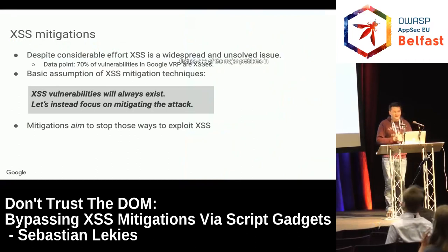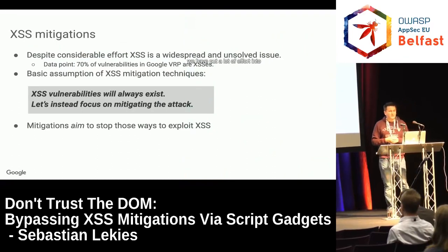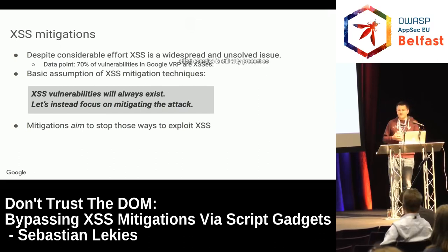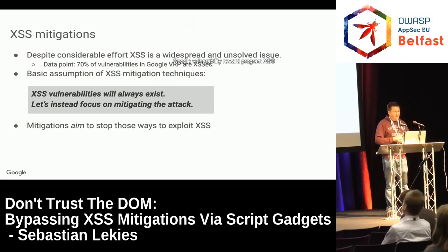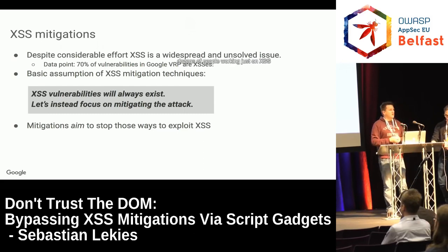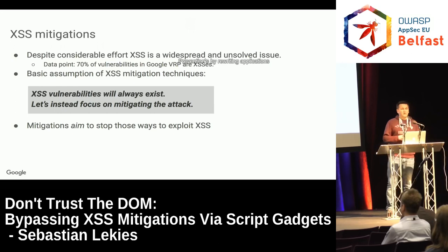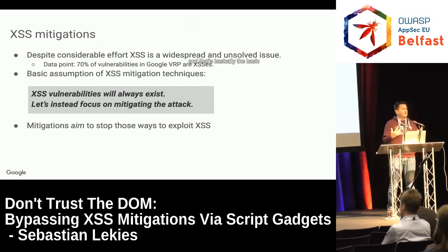One of the major problems in web security is cross-site scripting, and we have put a lot of effort into fixing or preventing it. Despite all this effort, XSS is still omnipresent. As a data point, in the Google vulnerability reward program, XSS makes up 70% of all reported vulnerabilities. We have literally dozens of people working just on XSS prevention — rewriting applications, creating auto-escaping templating systems, creating detectors and scanners — and still we have such a huge number of XSSs. This is a fundamental problem of the web platform, and that's basically the basic assumption of XSS mitigation techniques.